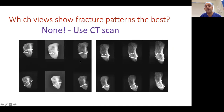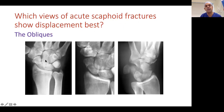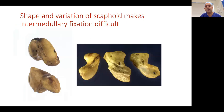Fracture lines in the scaphoid cannot be clearly seen on any single x-ray view. If you're doing non-union work, or if you're unsure whether the fracture is at the waist or proximal pole, always get a CT scan — CT is your best friend for scaphoid work. For assessing displacement, oblique views are helpful. You can see fracture lines and displacement more clearly on those.